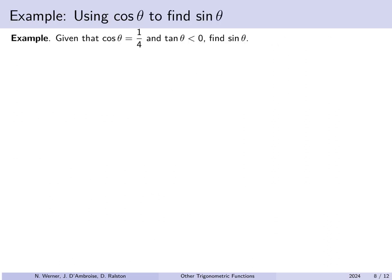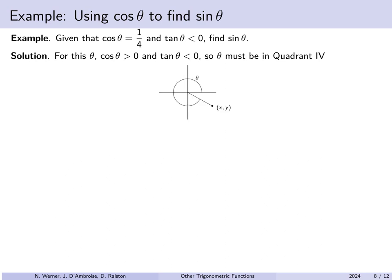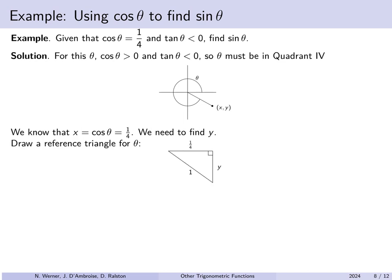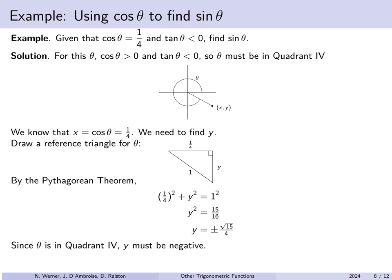Another example: given that cosine of theta is 1/4 and the tangent of theta is negative, can we find the sine of theta? Cosine is positive in quadrants 1 and 4; tangent is negative in quadrants 2 and 4. Where do both conditions hold? Quadrant 4. So wherever our angle is, it's in quadrant 4, and the x-coordinate is positive 1/4. Drawing a reference triangle with hypotenuse 1, we solve for y by the Pythagorean theorem, giving y = ±√15/4. Since we're in quadrant 4, we pick the negative choice: sine of theta equals −√15/4.